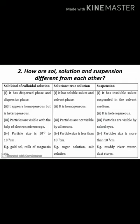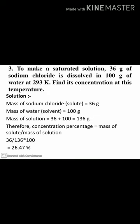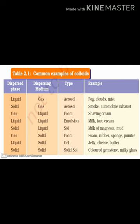The basic differences to remember among solution, colloid, and suspension are particle size, visibility, stability, and the type of mixture — homogeneous or heterogeneous. One or two examples are enough for the difference. There is also a table of common examples of colloids showing dispersed phase, dispersion medium, type, and examples — it's very interesting and worth studying.